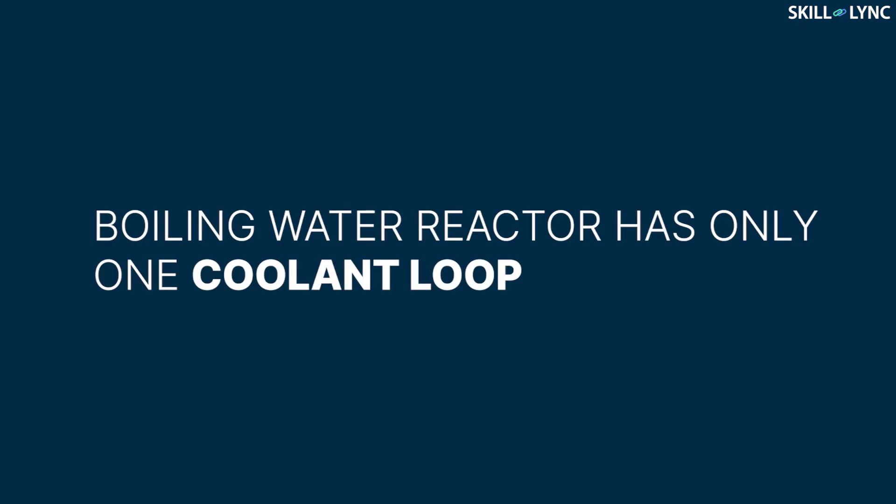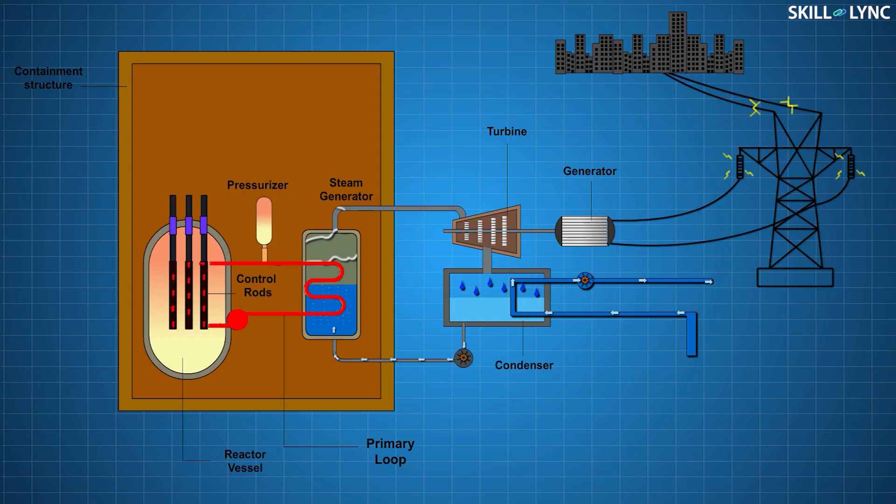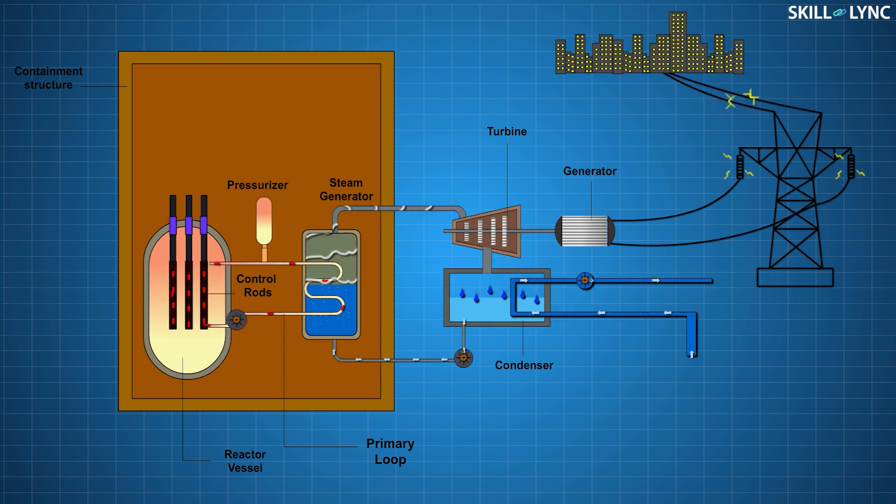As we have seen in the case of a boiling water reactor, there is only one coolant loop that gets the heat from the reactor and converts water to steam for power generation. But in a pressurized water reactor, there are two separate coolant loops, namely the primary and the secondary loop.